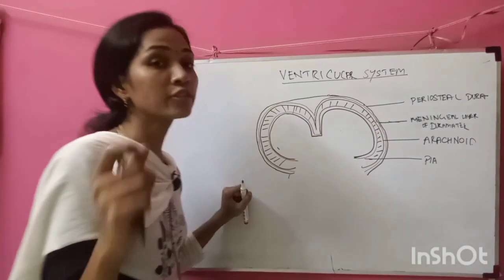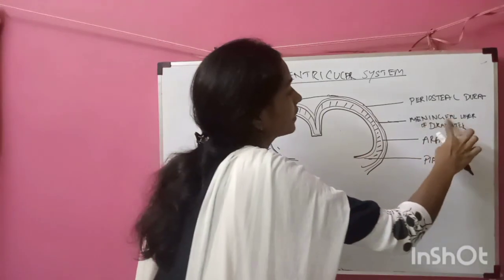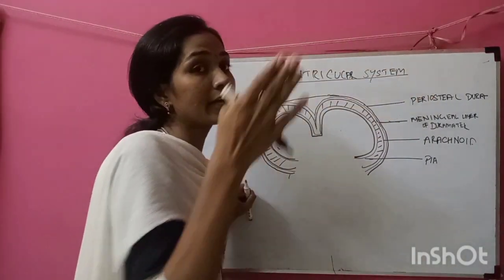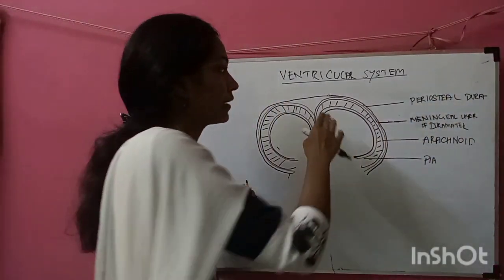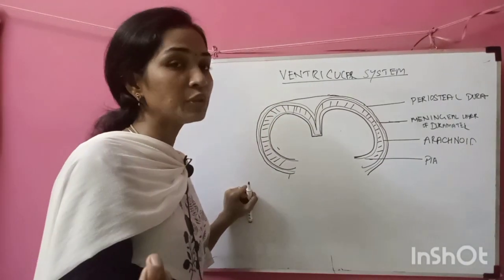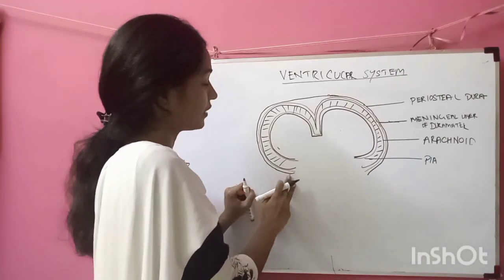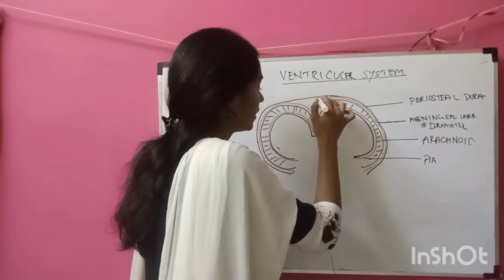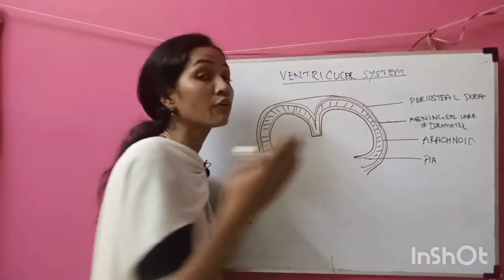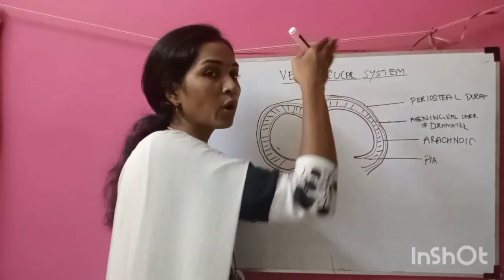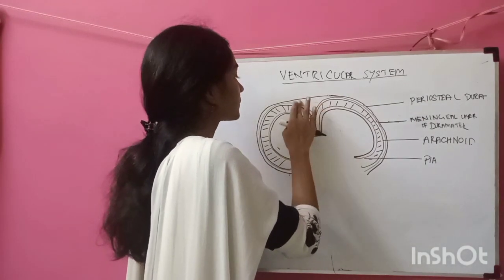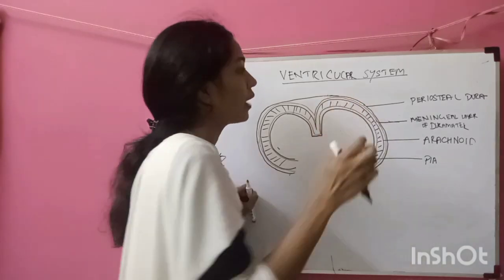The dura mater has two coverings: the meningeal layer of the dura mater and the periosteal layer of the dura mater. The periosteal layer is closely attached to the periosteum, while the meningeal layer is closer to the arachnoid mater. There is actually no space between these two layers — instead, they form a sinus called the superior sagittal sinus.